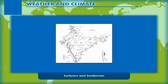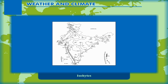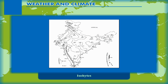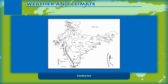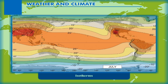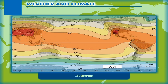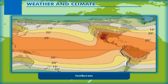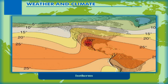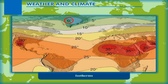Isohyets and isotherms. Isohyets — from 'hyetos' meaning rain — is a line joining points of equal rainfall on a map in a given period. A map with isohyets is called an isohyetal map. An isotherm — from 'thermos' meaning heat — is a line that connects points on a map that have the same temperature. Therefore, all points through which an isotherm passes have the same or equal temperatures at the time indicated. An isotherm at 0 degrees Celsius is called the freezing level.